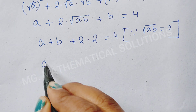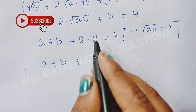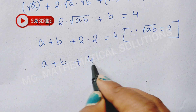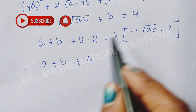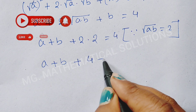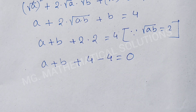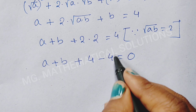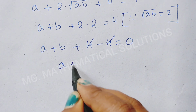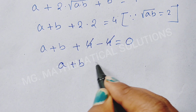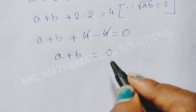So a plus b plus 4 equal to 4. We bring 4 to the left side, so minus 4 equal to 0, and the 4s cancel. So a plus b equal to 0.